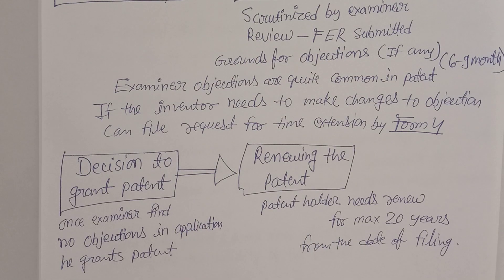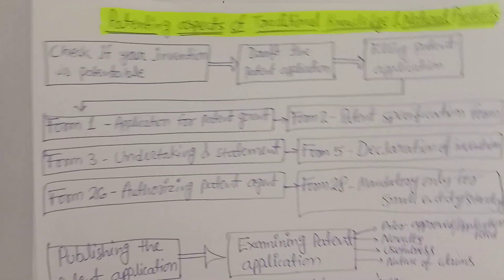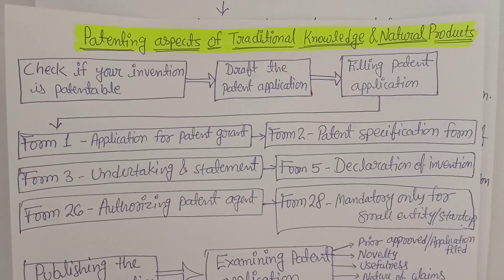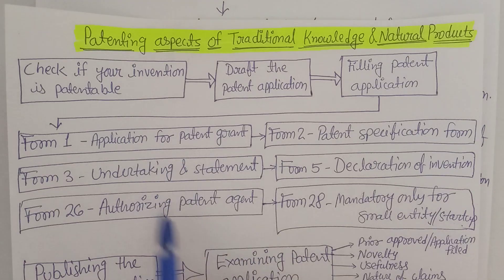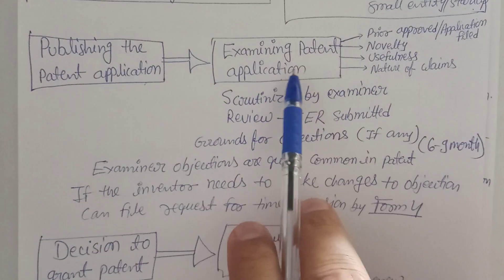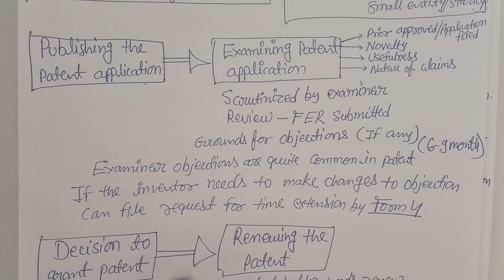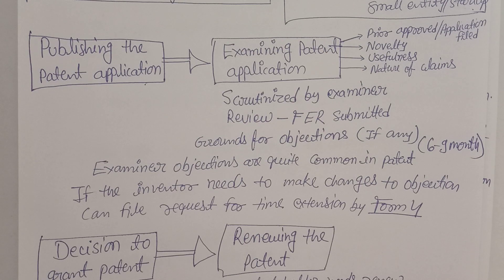During the patent period, the drug or information remains under the patent holder's ownership. After the patent expires, anybody can use it. These are the different steps we need to follow — steps one through seven — for patenting any traditional knowledge or natural products.